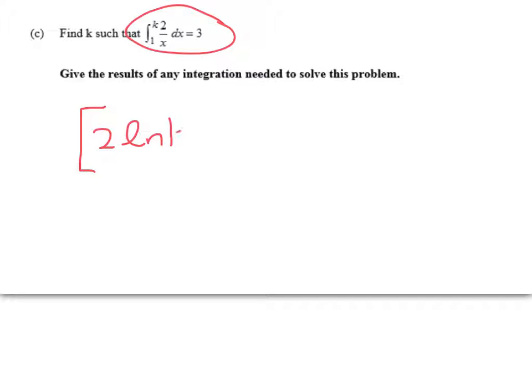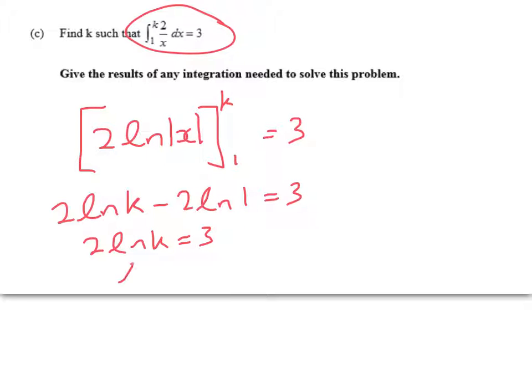So 2 log of x from k to 1 is equal to 3. So evaluating the integral, we get 2 log of k minus 2 log of 1 is equal to 3. Log of 1 is 0, so we have 2 log of k equals 3. Log of k is equal to 1.5. So k equals e to the power of 1.5, which is 4.48. Thank you.